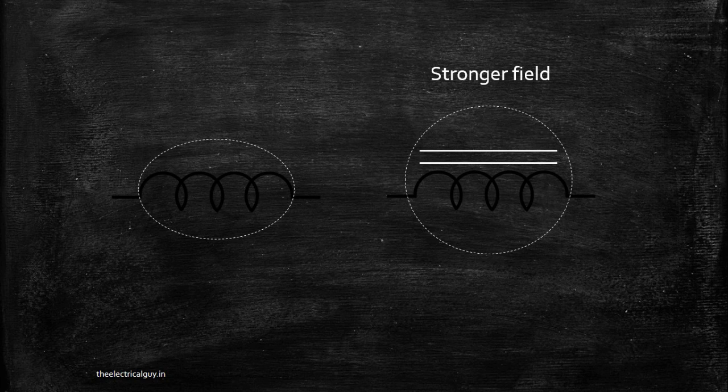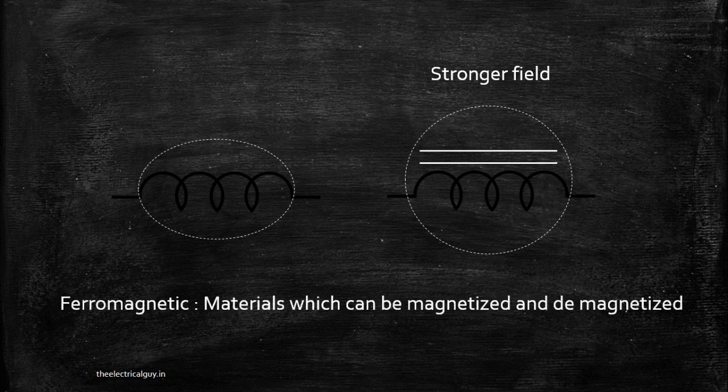What is ferromagnetic material? Materials which can be magnetized and demagnetized easily are called ferromagnetic materials, and soft iron is one example. We can create a simple electromagnet using soft iron and easily demagnetize it — that is what makes it a ferromagnetic material. This is why most inductors are wound on an iron core.